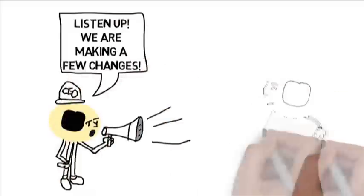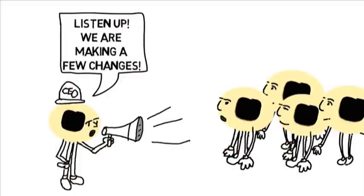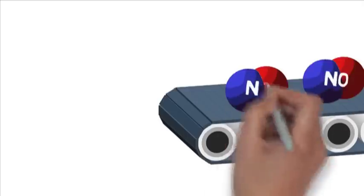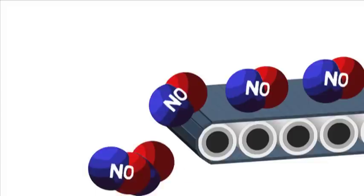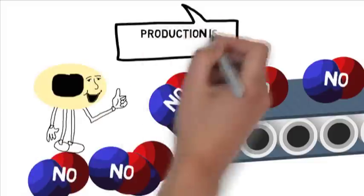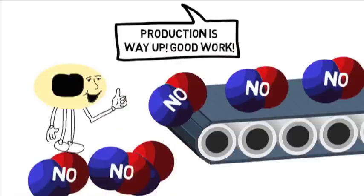Now, imagine that the CEO of the factory puts the workers on an exercise plan, and they start eating a healthy diet. Healthy workers can produce NO at their normal output levels, conveying benefits to the entire cardiovascular system.